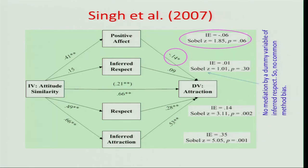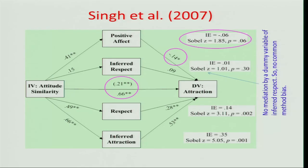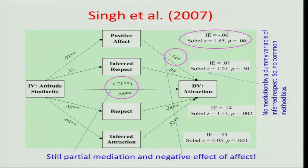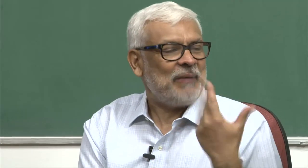Looking at inferred respect (the dummy variable), path A is 0.15 (non-significant) and path B is 0.09 (non-significant) — so it plays no causal role, confirming that theoretical variables should mediate, not dummy ones. For positive affect, the effect is marginally significant but negative — theory predicts positive, but this is negative, which is a challenge. However, for respect and inferred attraction, effects are positive and significant. Despite three mediators, mediation remains partial — c-prime is still significant.